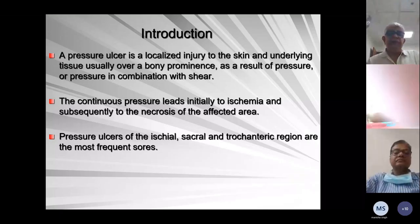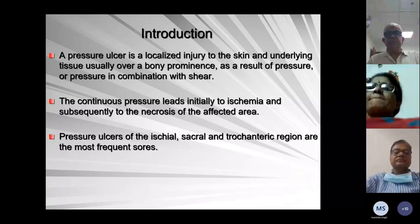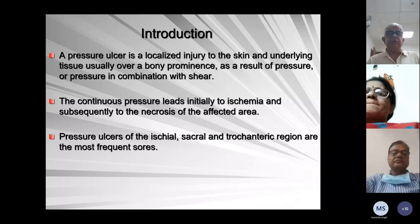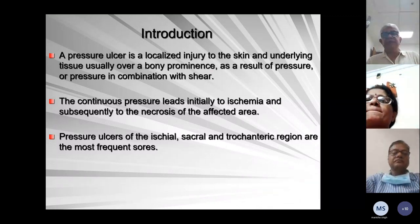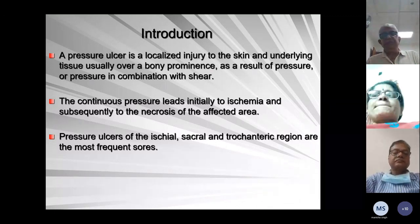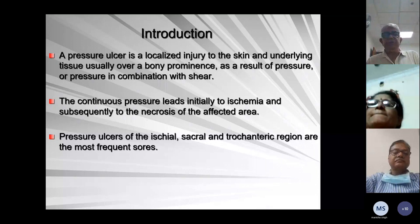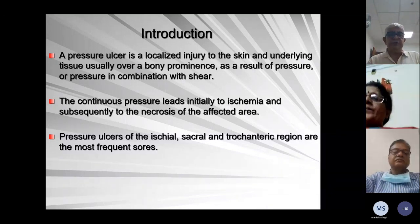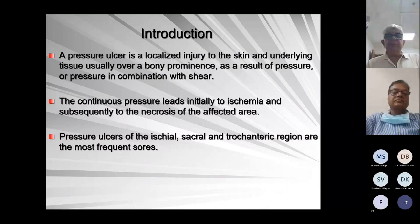A pressure ulcer is a localized injury to the skin and underlying tissue, usually over a bony prominence, as a result of pressure or pressure combined with shear. Continuous pressure leads to initial ischemia and subsequently necrosis of the affected area.